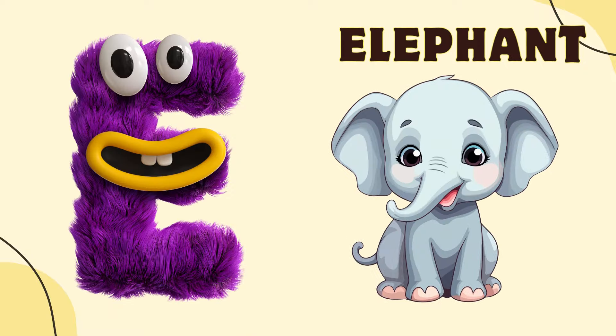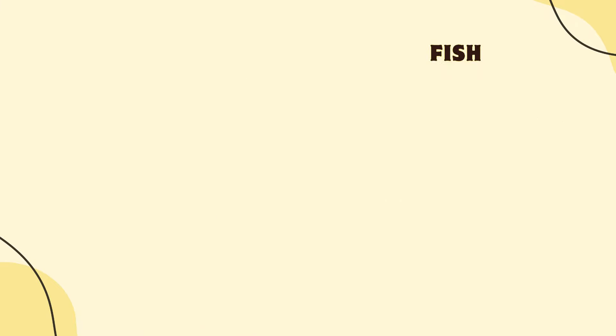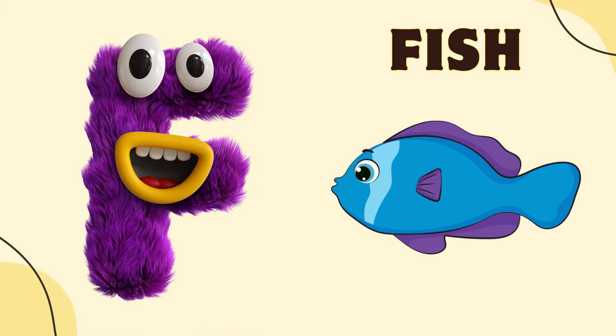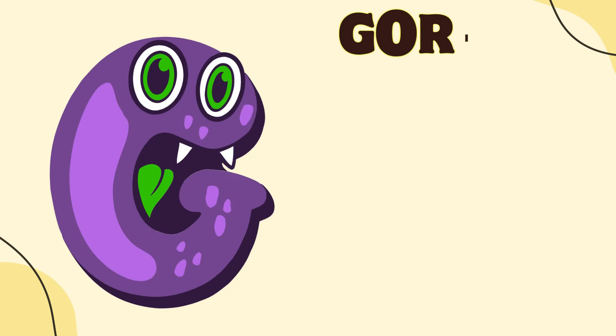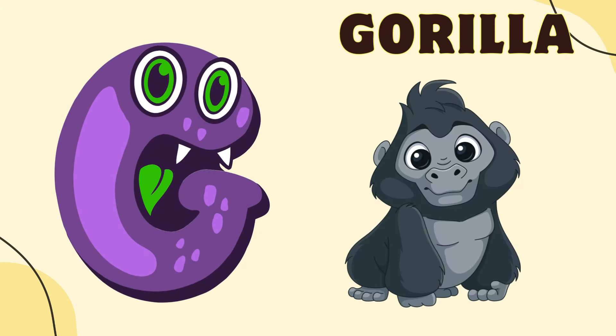E is for Elephant, E-E-Elephant. F is for Fish, F-F-Fish. G is for Gorilla, G-G-Gorilla.